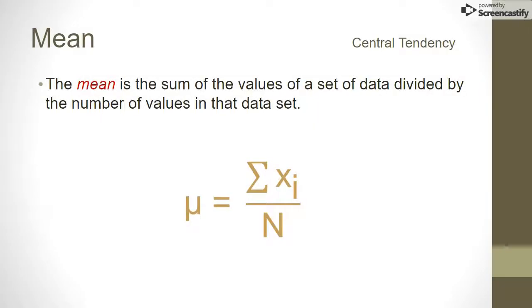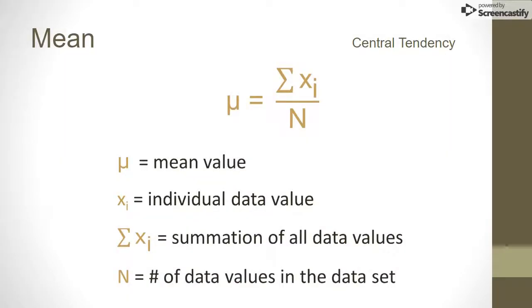The mean is the most frequently used measure of central tendency. Finding the mean of a data set is the same as finding the average. You can find this formula for calculating the mean in page 1 of your PLTW formula sheet. It might look a little complicated, but this is something you've probably known how to do for years.